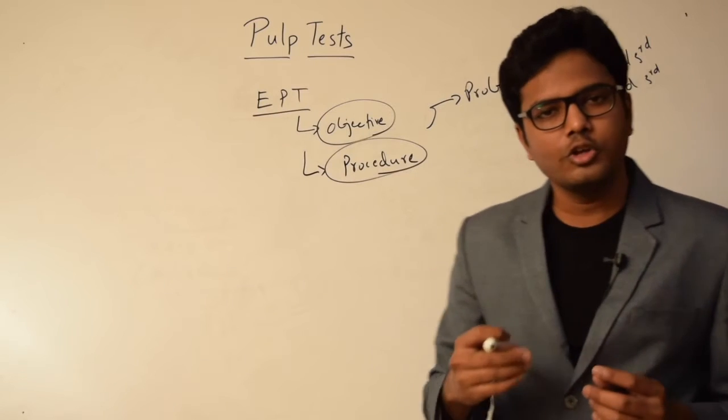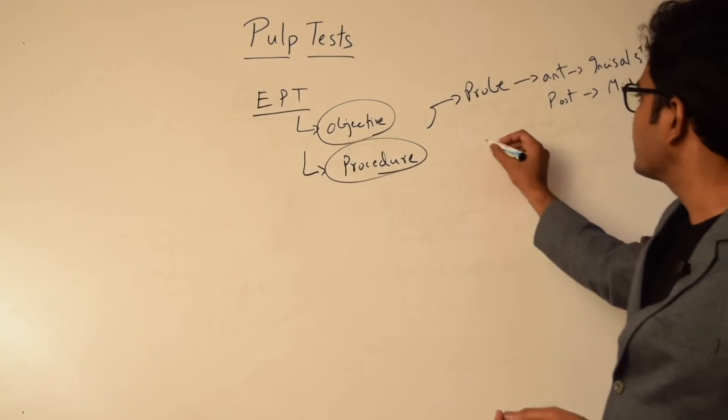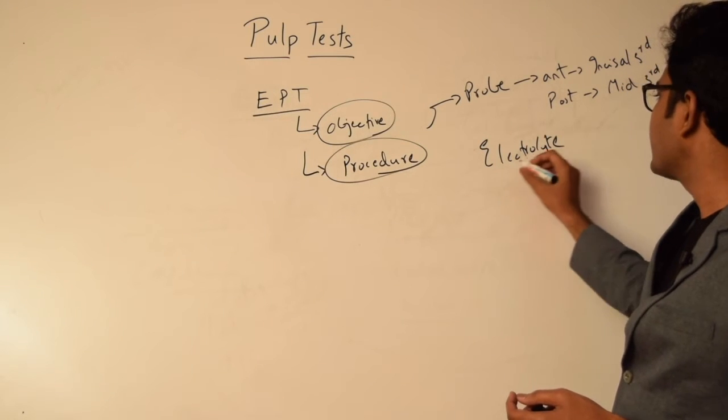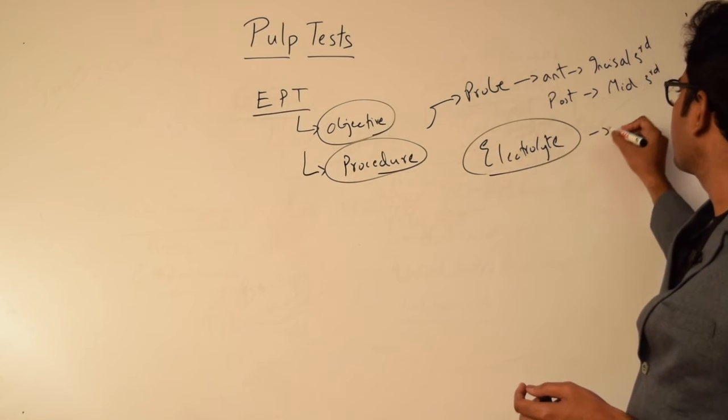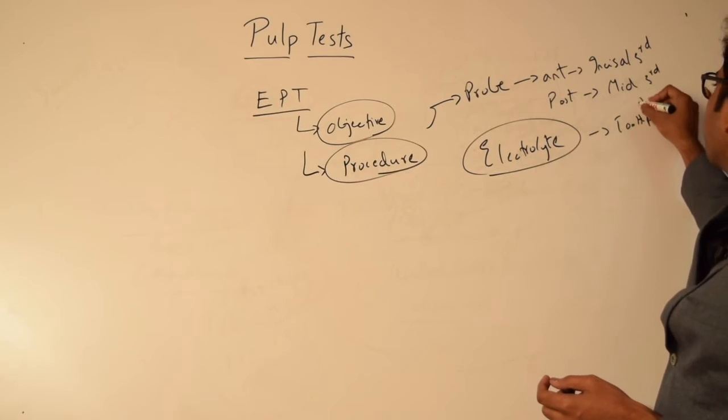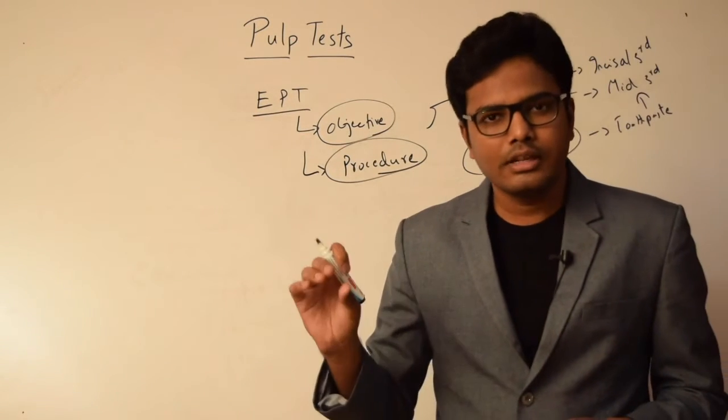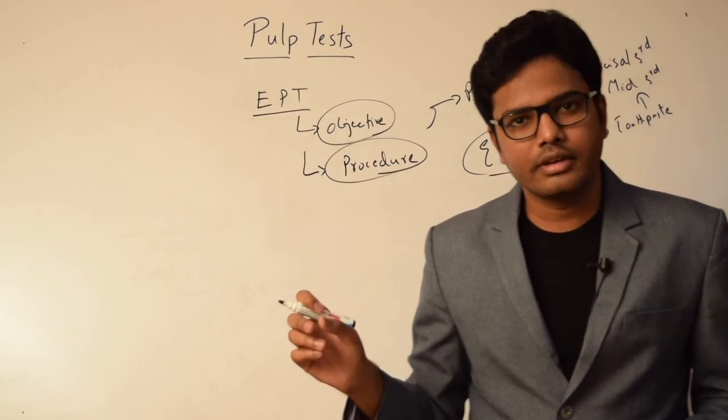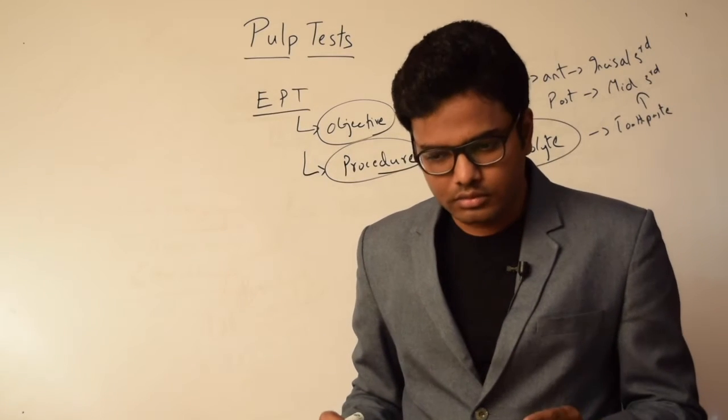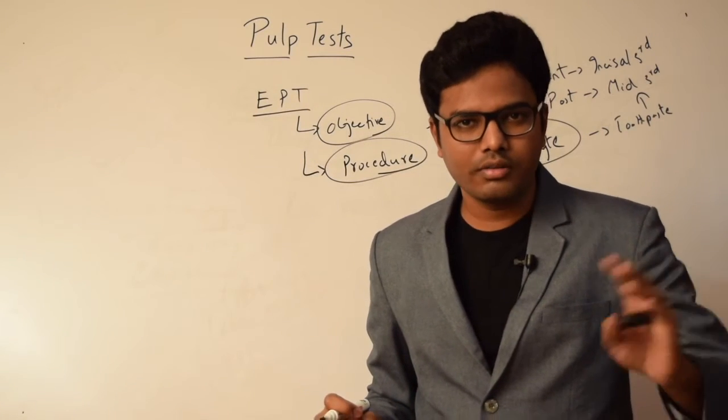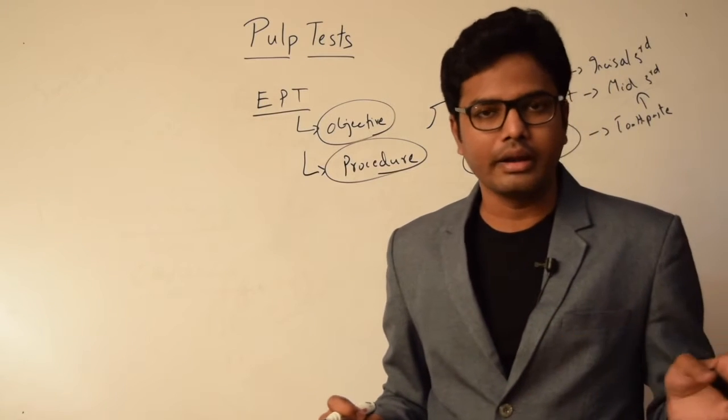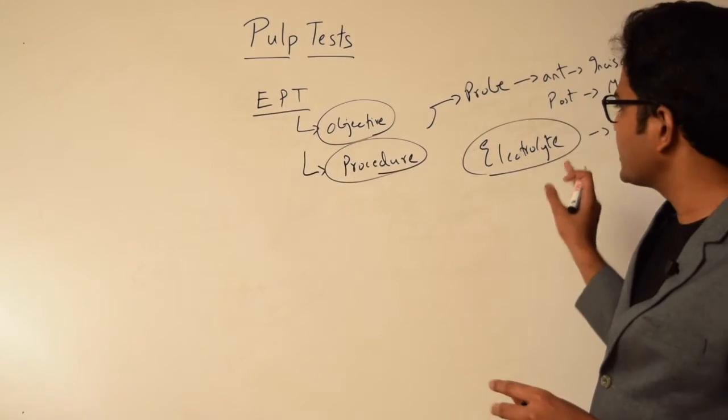This is the ideal location for placement of the probe. We need to make use of an electrolyte, usually a toothpaste. Electrolyte is very much essential as it helps us to conduct electricity. This electrolyte can be placed in these regions, and then we will place the tip of the probe and slowly increase the current intensity by turning the rheostat slowly. We'll ask the patient to raise his hand or give us an indication when he feels a tingling sensation or mild pain.